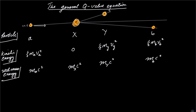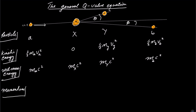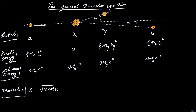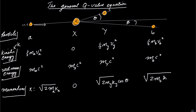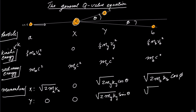The rest mass energies are: M_A c squared for A, M_X c squared for X, M_Y c squared for Y, and M_B c squared for B. The x-components of momentum are: for the first particle, the square root of 2M times its kinetic energy; the second particle has no momentum; the third particle's momentum is the square root of 2M_Y K times cosine of angle theta; and the last particle has momentum square root of 2M_B K times cosine of angle phi. The y-components are: the daughter nucleus has negative square root of 2M_Y K times sine of phi, and similarly for particle B.